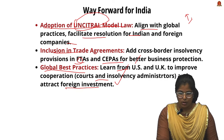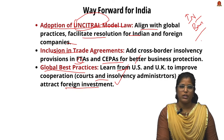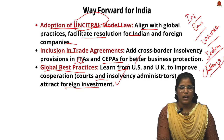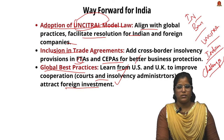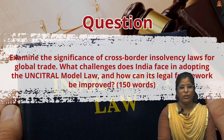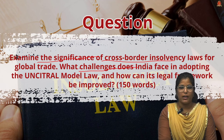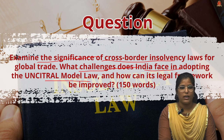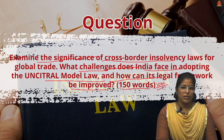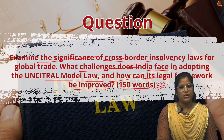To summarize the first article: we covered what insolvency and bankruptcy are, then UNCITRAL, shortcomings in India's legal system, and challenges in addressing cross-border insolvency. Now try answering this question in the comment section: 'Examine the significance of cross-border insolvency law for global trade. What challenges does India face in adopting the UNCITRAL Model Law and how can its legal framework be improved?' Write your answer in 150 words for 10 marks.